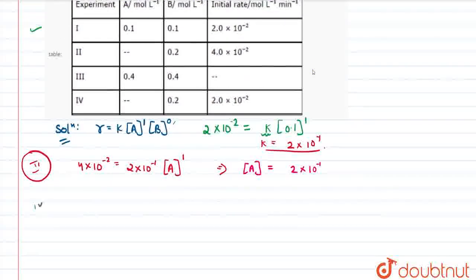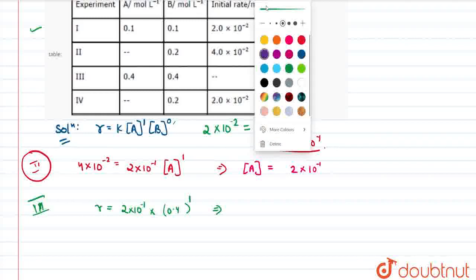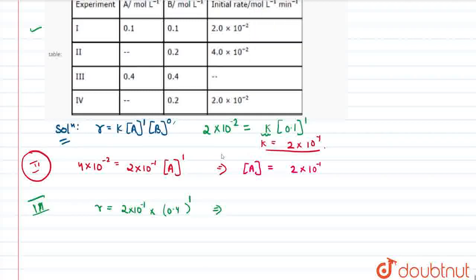Moving ahead to the third table, we have to calculate the rate. The rate will be K — which is 2×10⁻¹ — into 0.4 raised to the power 1. Calculating the rate, it will be 8×10⁻².